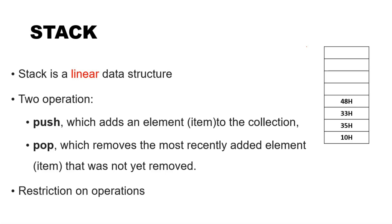Here the size of the stack is eight items, and already four items are filled. To store an item in the stack, you simply store it — for example, 10H. Storing a single item inside the stack is called push. Push means adding one element or item to the collection of items in the stack. Push stores only one item; to store one more item you have to make one more push operation.